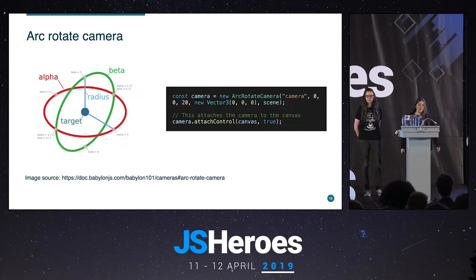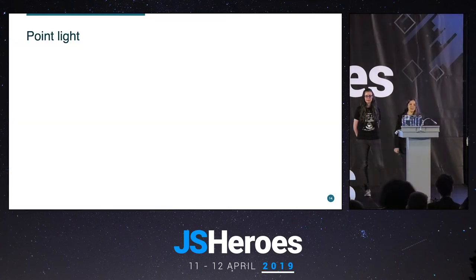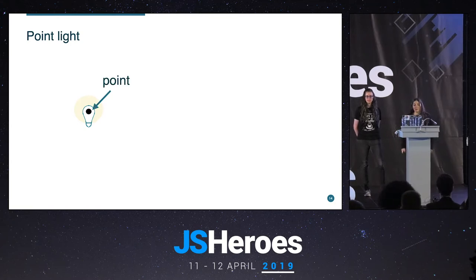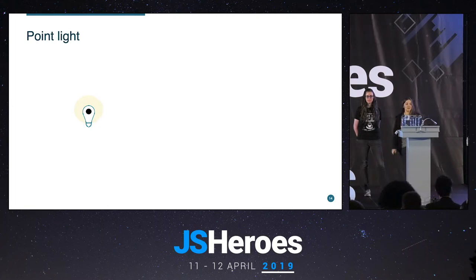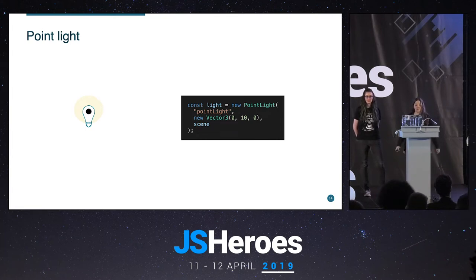We still don't see anything on the scene. Why? Without light, everything is black — just like in the real world. So we add a light. The simplest is the PointLight, which emits light from a single point in all directions. In code, we use the PointLight class, give it a name, define the point's position in the options, and add it to the scene. Done — you have a light.